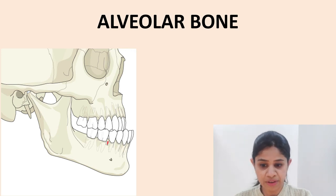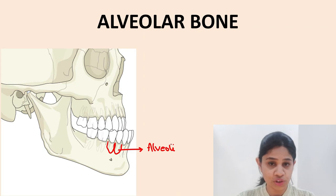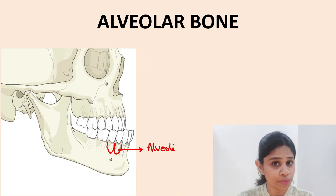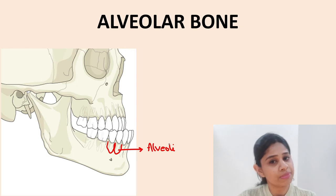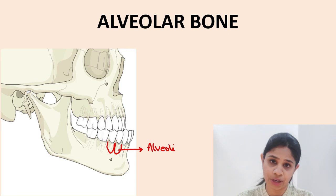It basically forms the tooth socket, which is otherwise termed as the alveoli. Before we dig into the structure of the alveolar process, let's discuss briefly the normal bone, as it becomes very easy to correlate the normal bone structure to that of the alveolar bone.